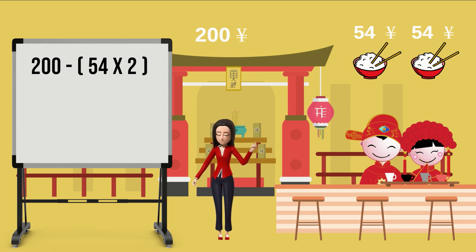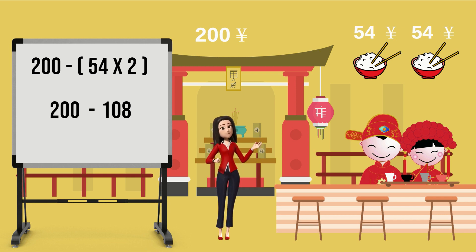To evaluate this numerical expression, do what's between parentheses first, then subtract. And I still have 92 yen.